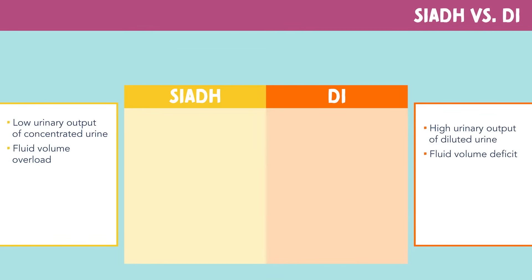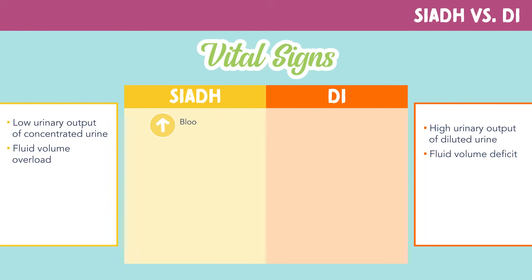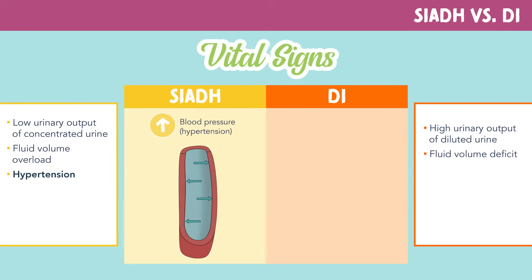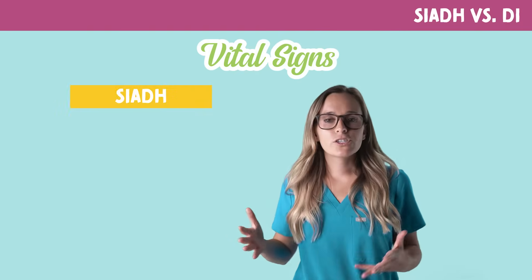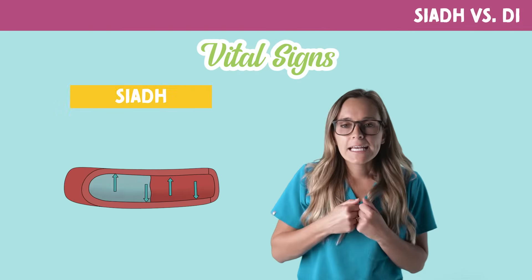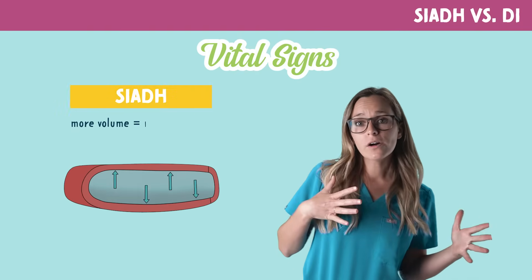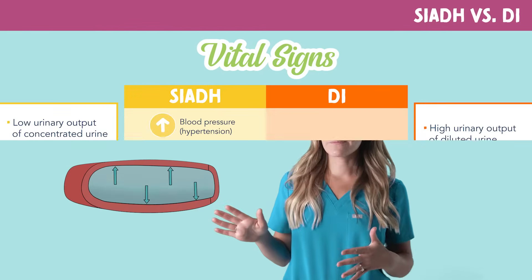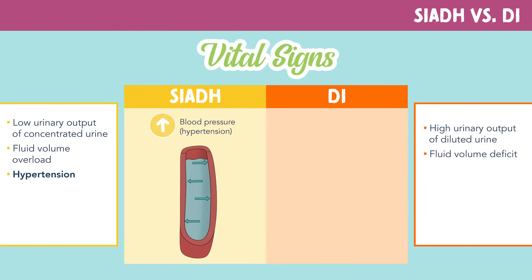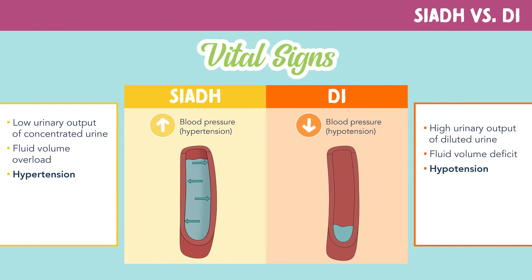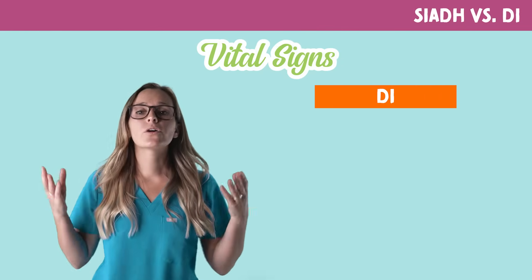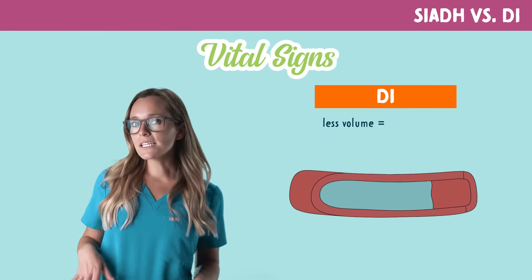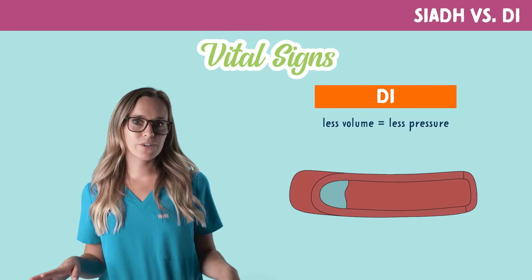Now for vital signs. In SIADH, we will see an increase in blood pressure called hypertension. In SIADH, we are retaining water, so more volume equals more pressure. But in DI, we will see a decreased blood pressure called hypotension. In DI, we are losing water, so less volume equals less pressure.